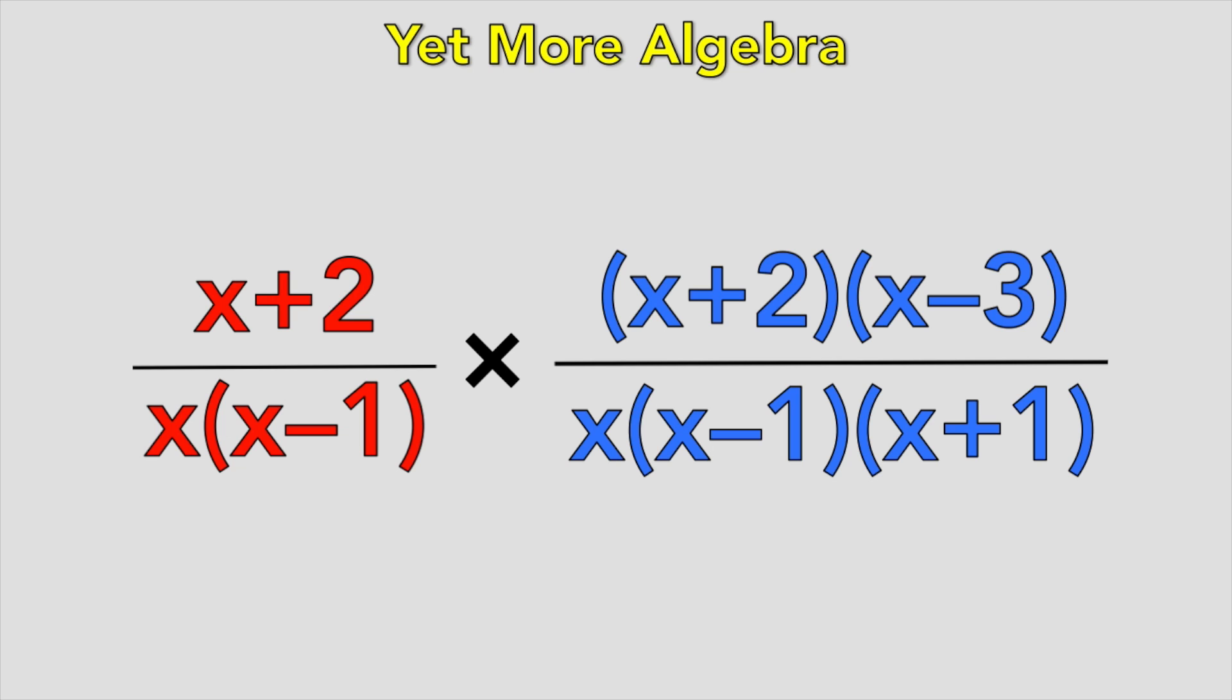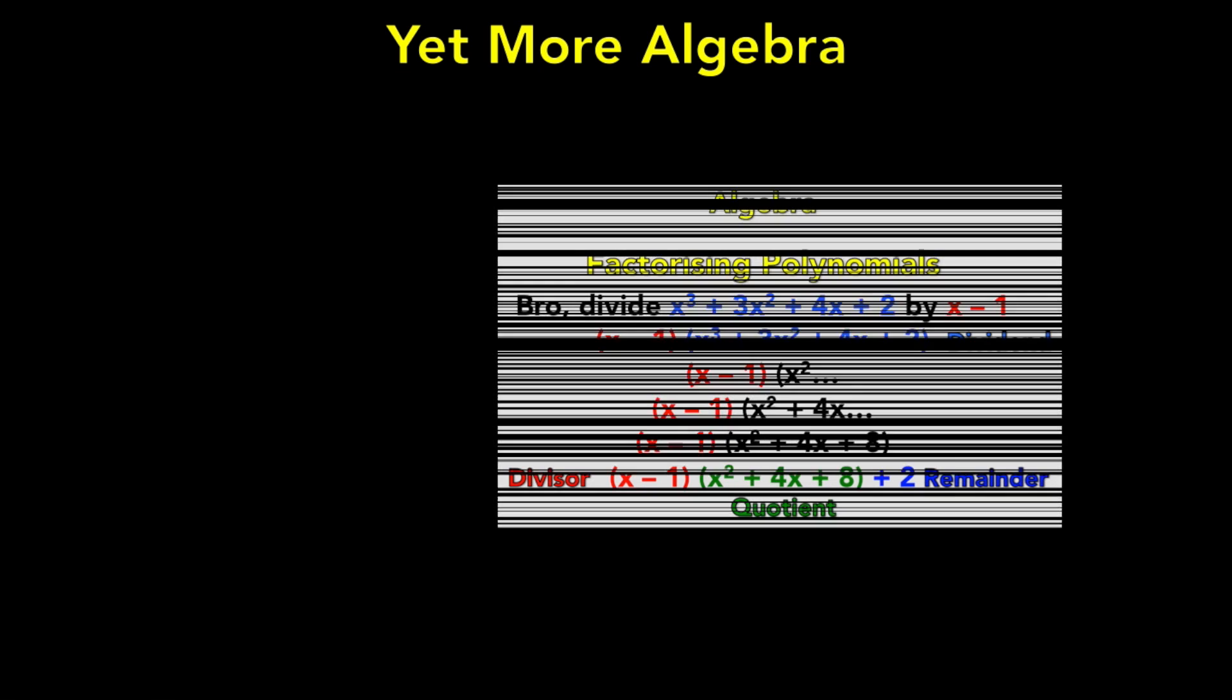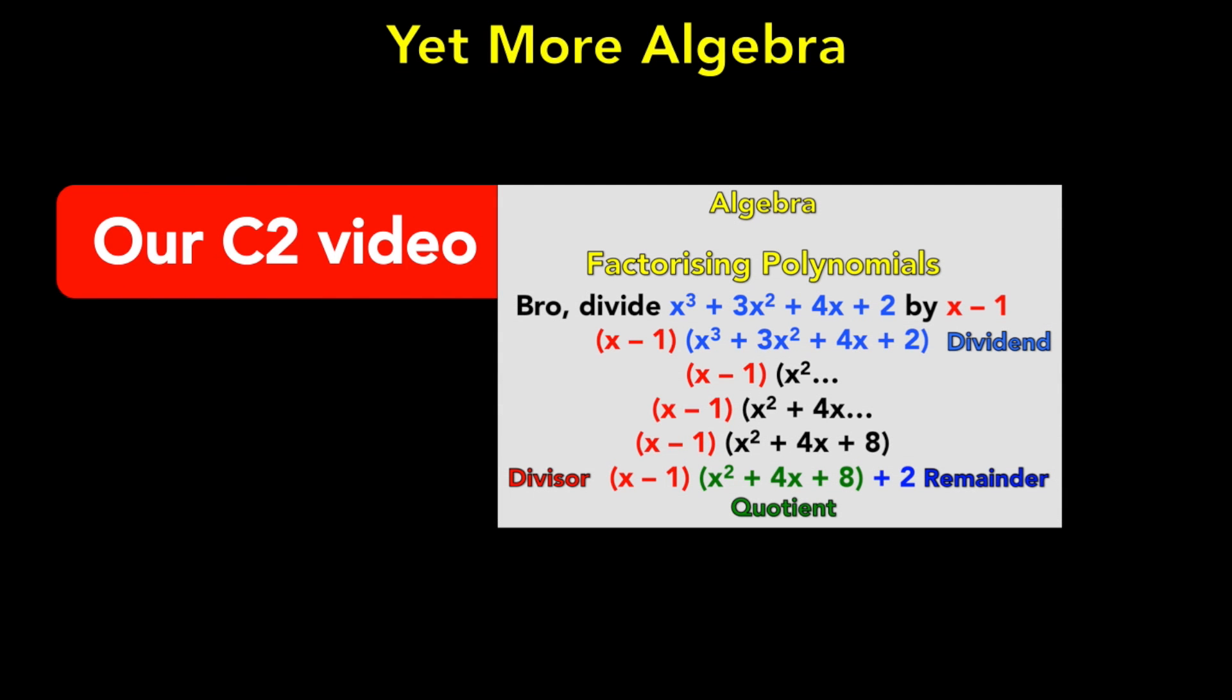You also need to be able to do hard division. We covered back in C2, so if you want a shortcut, go look at part A of Core 2. It's a little guide there. Oh, and please don't use the example on screen now. It's from an early draft of the video and it's actually wrong. Yeah, the remainder's wrong. It should be 10, I think.